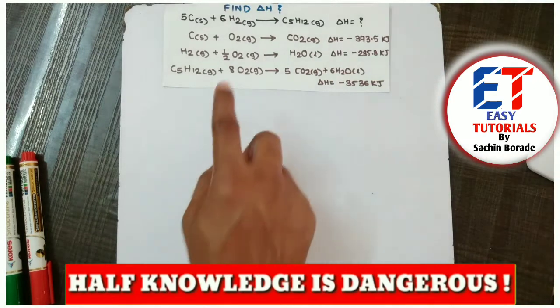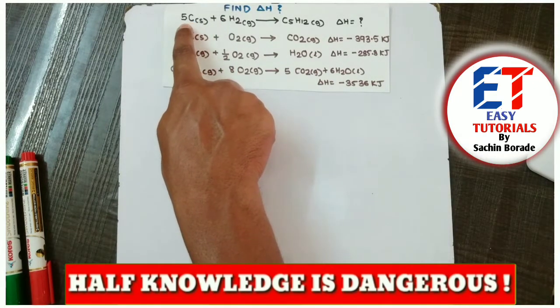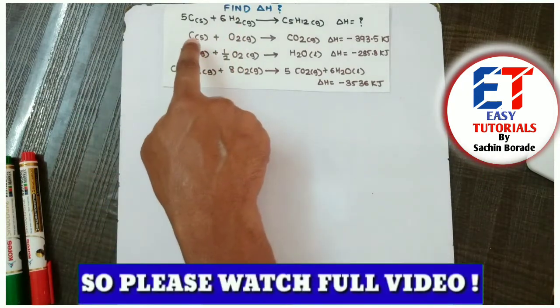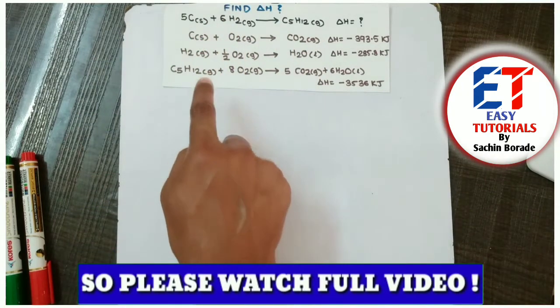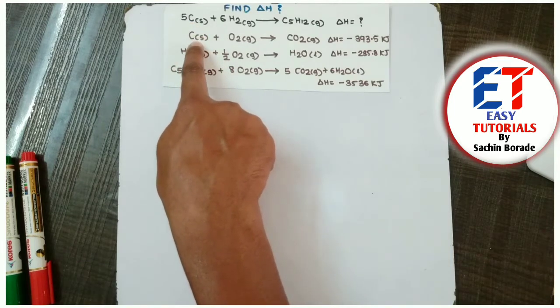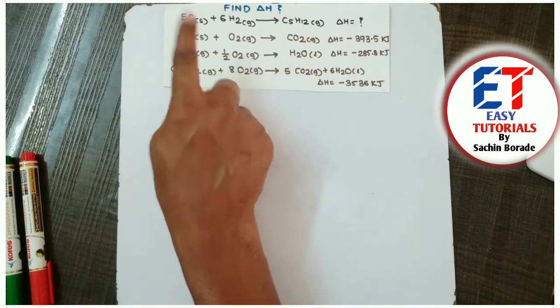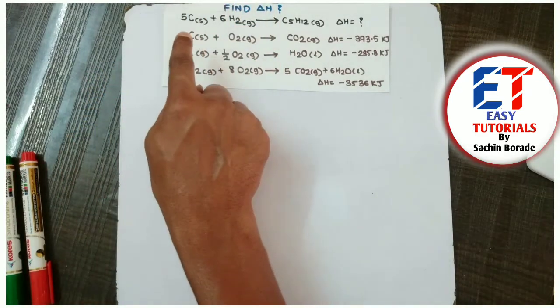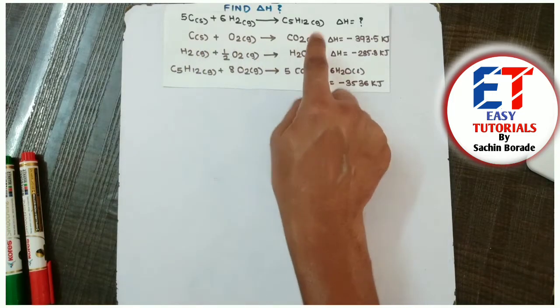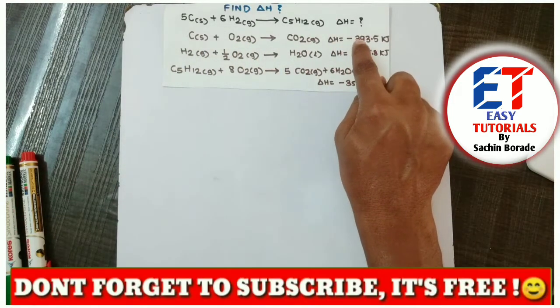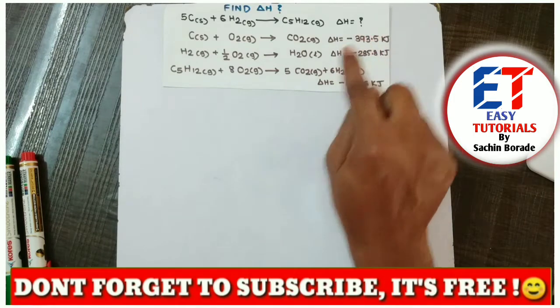So first look at the carbon atom present in the first reaction. There are 5 carbon atoms. We have to look for carbon atoms present in other reactions. Here there are 5 carbon atoms and here I can find there is a single carbon atom. So we need to multiply this carbon by 5, but we need not multiply only the carbon atom. We have to multiply the entire reaction by 5 and in addition to that, we have to also multiply delta H by 5.